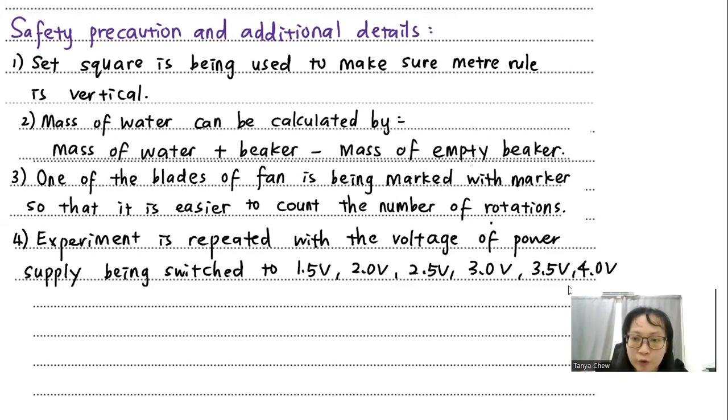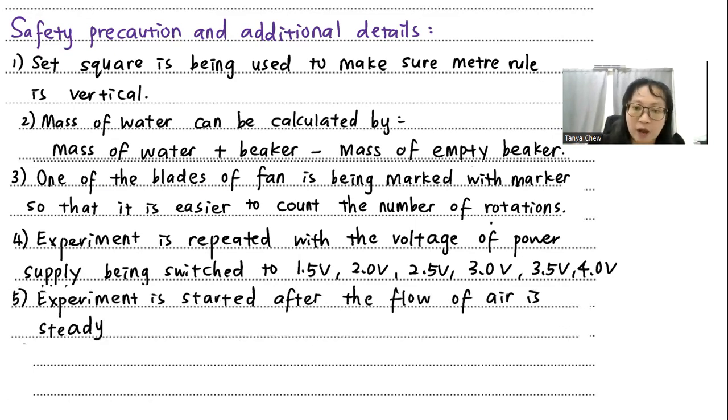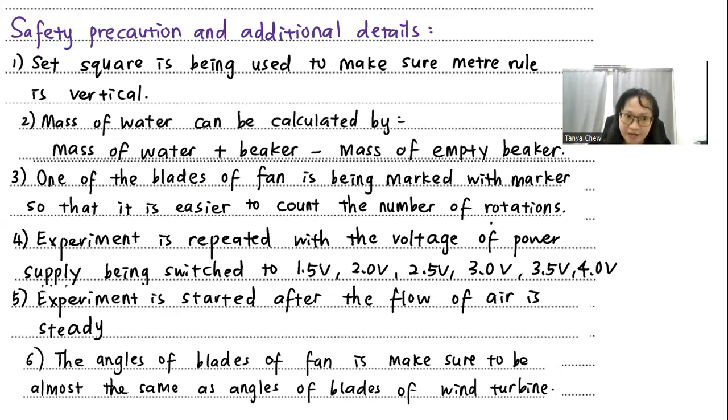Number four, experiment is repeated with the voltage of power supply being switched on to maybe 1.5 volt, 2 volt, 2.5 volt, 3 volt. You just give your suggestion to what kind of voltage that you want to use. And number five, experiment is started after the flow of the air is steady. You shouldn't just start the fan and start the experiment. You have to make sure that maybe after 10 seconds or 20 seconds, then only you start your experiment so that the results are more reliable. And number six, because six marks, so I put in six points, the angles of the blades of the fan is made sure to be parallel or almost the same angles as the blades of the wind turbine so that everything could go smoothly. So the air would flow smoothly to the wind turbine and you get a more significant result.